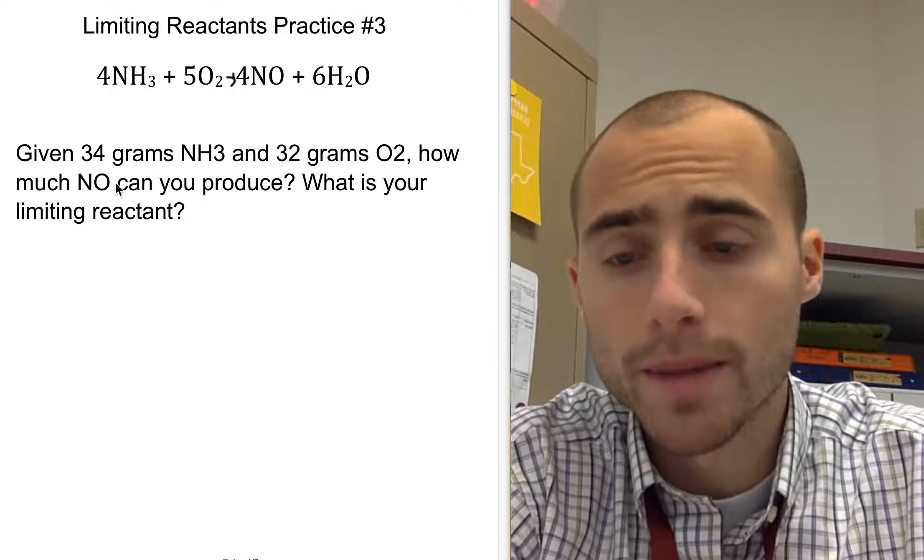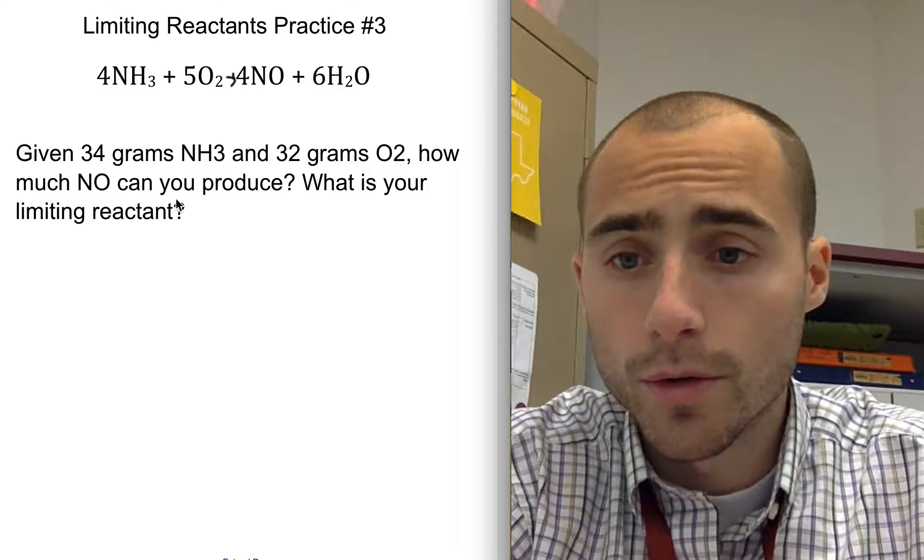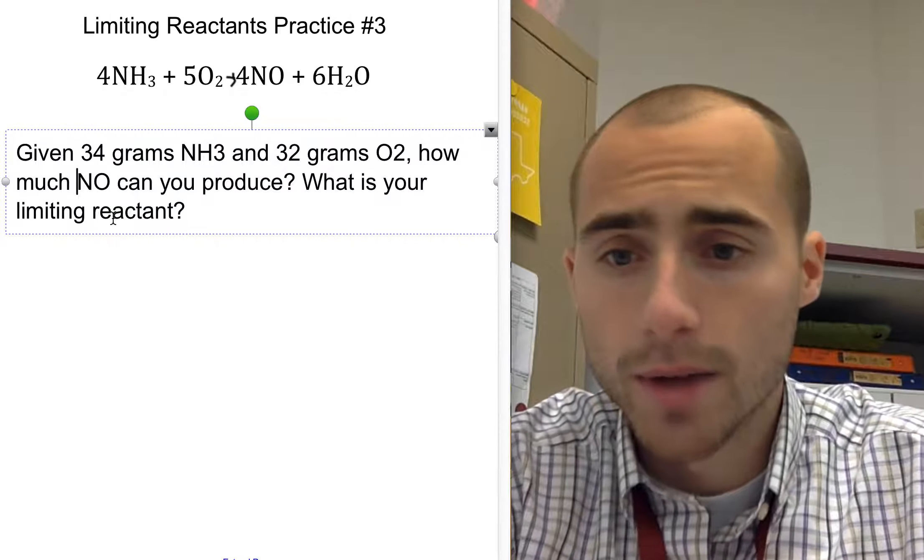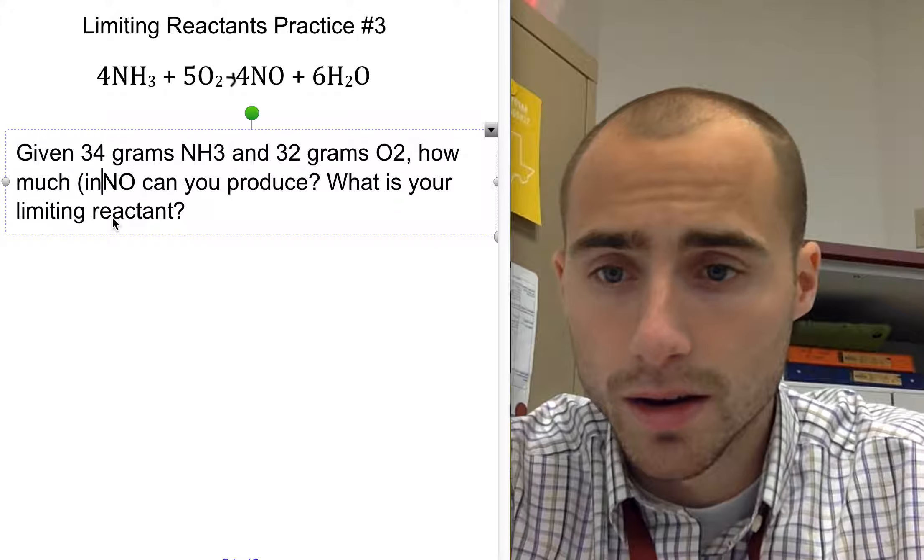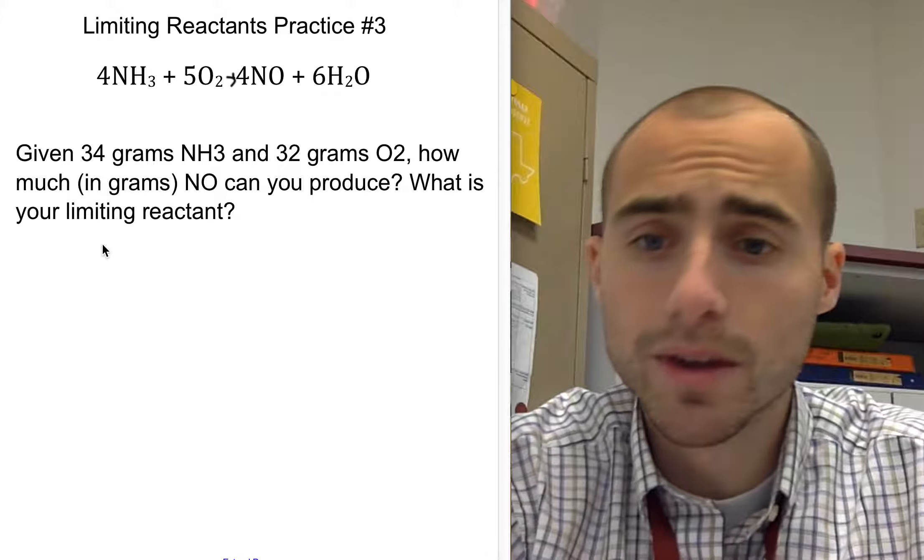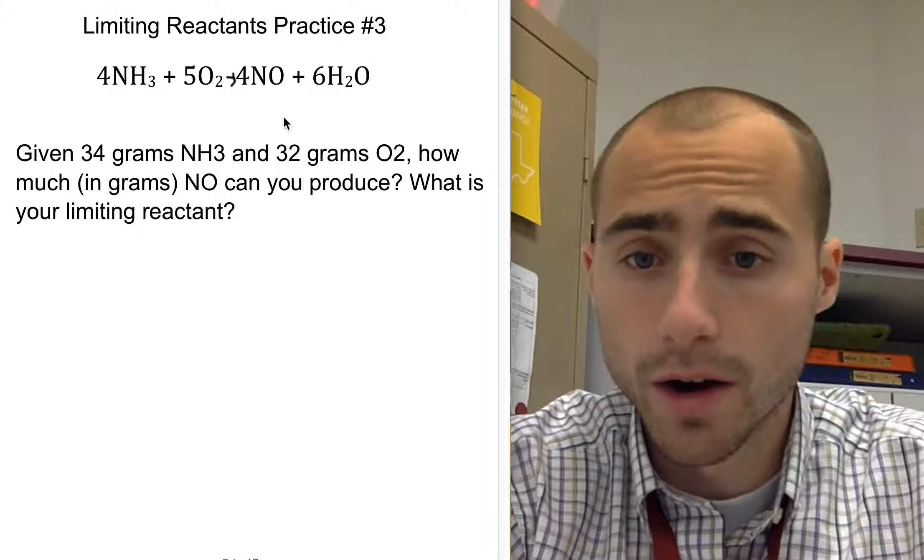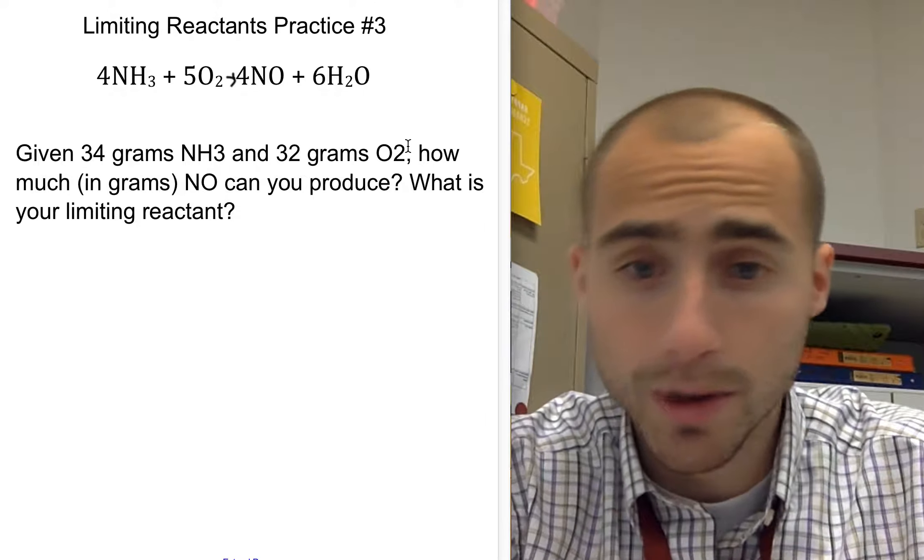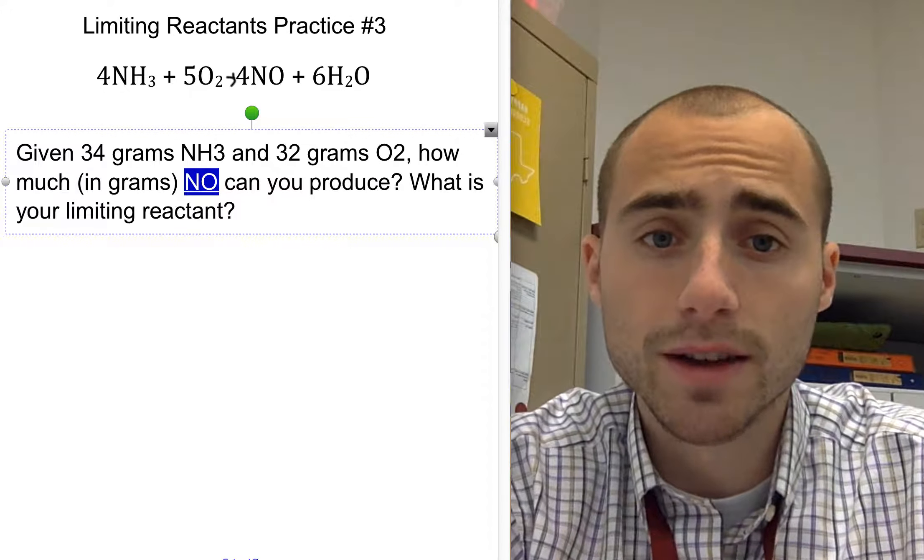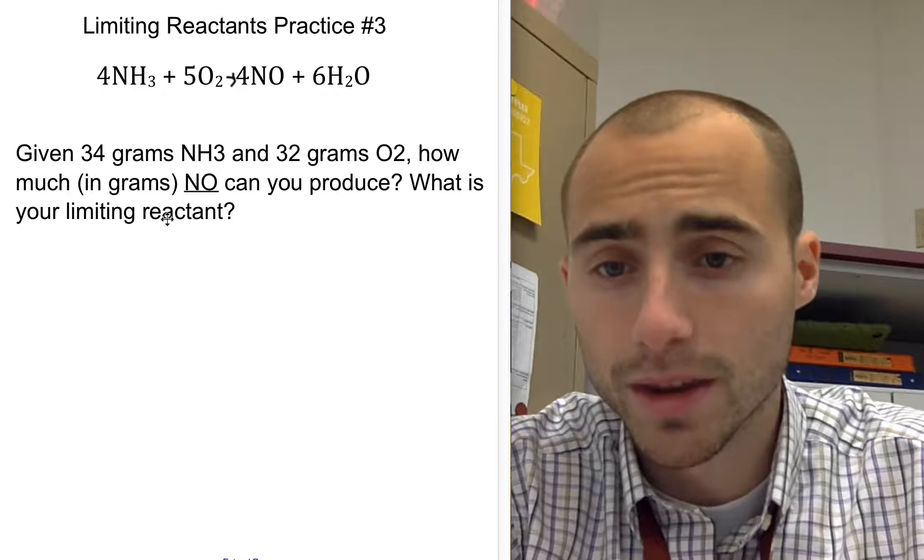First of all, balanced equation, we have that. Our second step is we have to convert grams of ammonia. I want to make sure that I specify here how much in grams nitrogen monoxide can you produce. So we have to go from grams to grams. We take grams of them to grams of our important product. In this case, read the question, how much NO can you produce? So we're looking at nitrogen monoxide this time, not water.